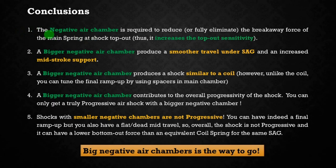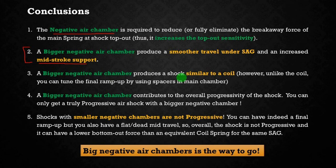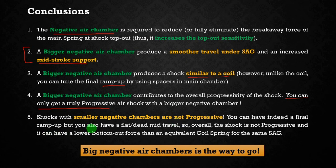In conclusion: the negative air chamber eliminates the initial breakaway force of the main chamber, increasing top-out sensitivity. More importantly, a big negative volume produces a much smoother shock under sag and provides more mid-stroke support, making it similar to a coil shock — with the advantage that you can tune the final ramp-up to get a truly progressive shock. Small negative air chambers are not truly progressive; they may have a final ramp-up but also a flat and dead mid-travel. The final message is: if you want an air shock similar to or better than a coil shock, aim for a big negative air chamber.